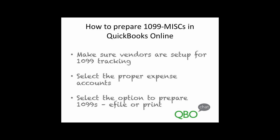First, you want to make sure vendors are set up correctly for 1099 tracking. You'll also make sure that the proper expense accounts are set up correctly. Finally, you'll select the option to prepare 1099s by either e-filing them or printing them.